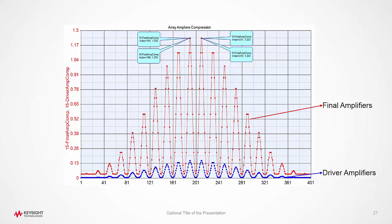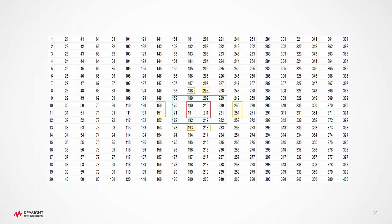The tools make it easy to identify these. And as can be seen in the table here, the central elements receive the maximum power. Amplifier connected to the element numbers 190, 210, 191, 211 are the highest compressed amplifiers.